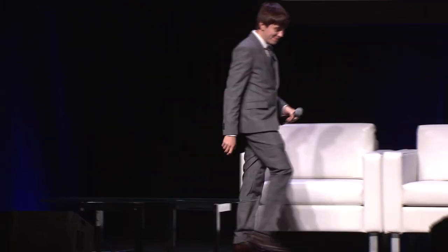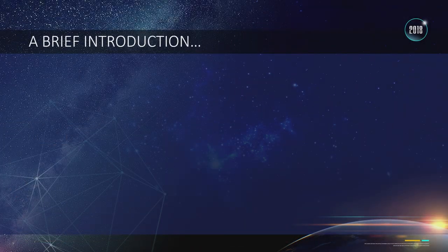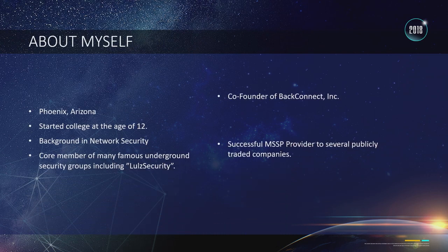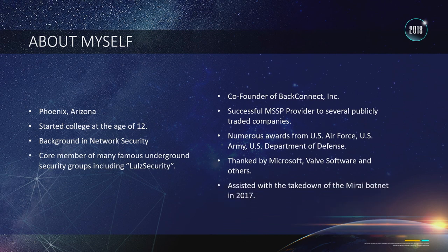Good morning everyone. My name is Marshall Webb, and today we're going to be talking about PATH — an ERC20 token for distributed network monitoring on the blockchain. A little bit about my background: I started college at age 12 and was a hacker for an extended period of time. I worked with Lowell Security and other organizations in the security field. We compromised systems from Sony to Nintendo to the PlayStation Network and Xbox Live. I did that until the age of 18, at which time I got caught.